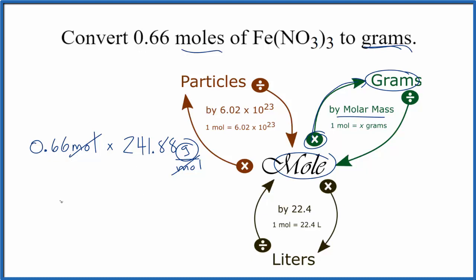We do the multiplication. We get 159.64 grams of iron(III) nitrate.